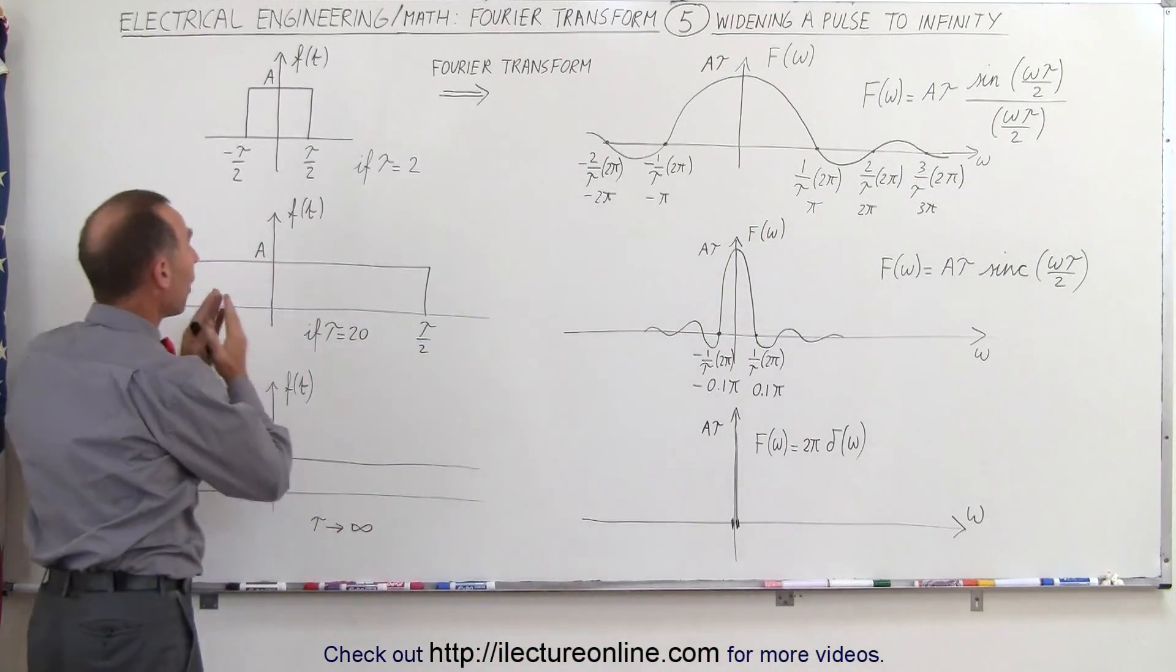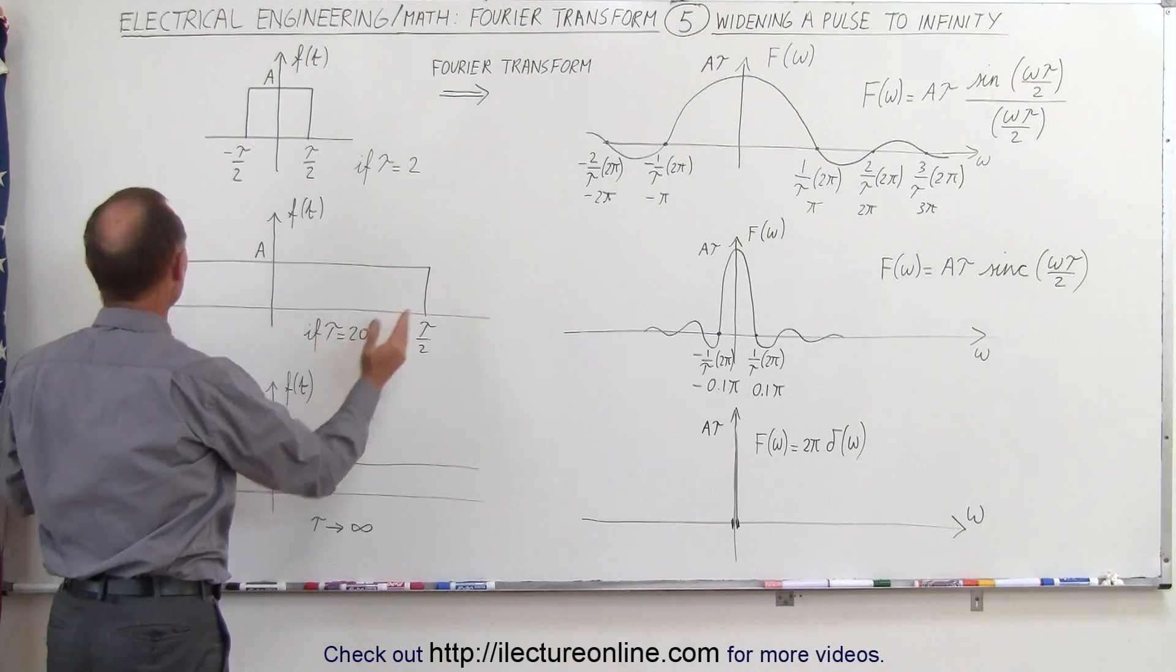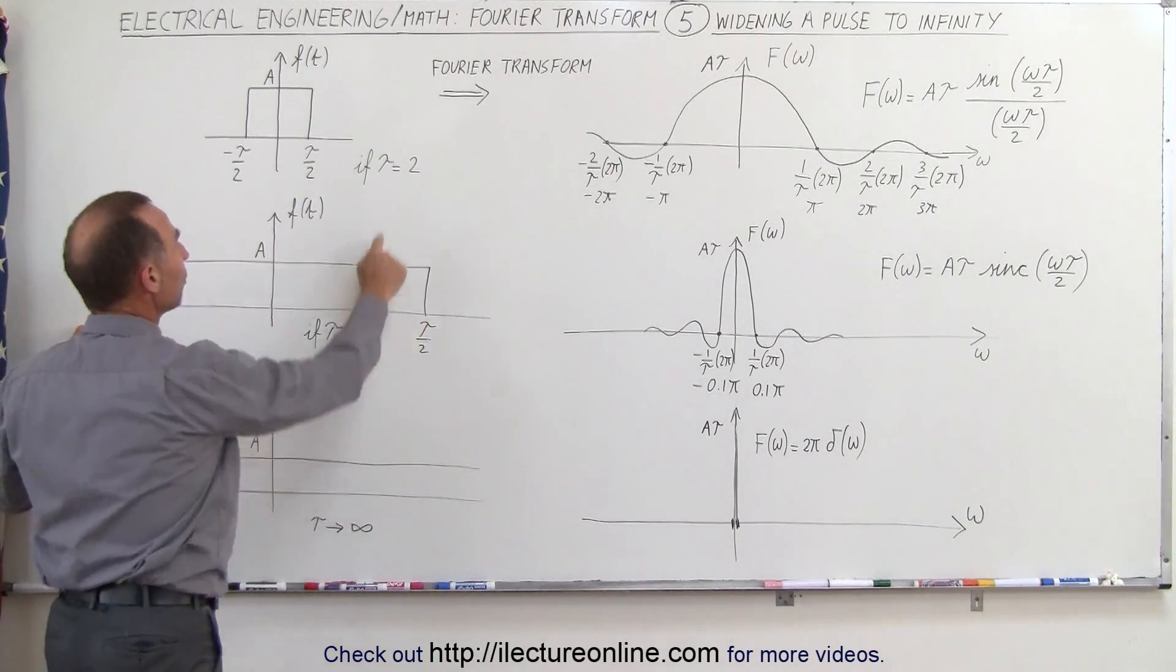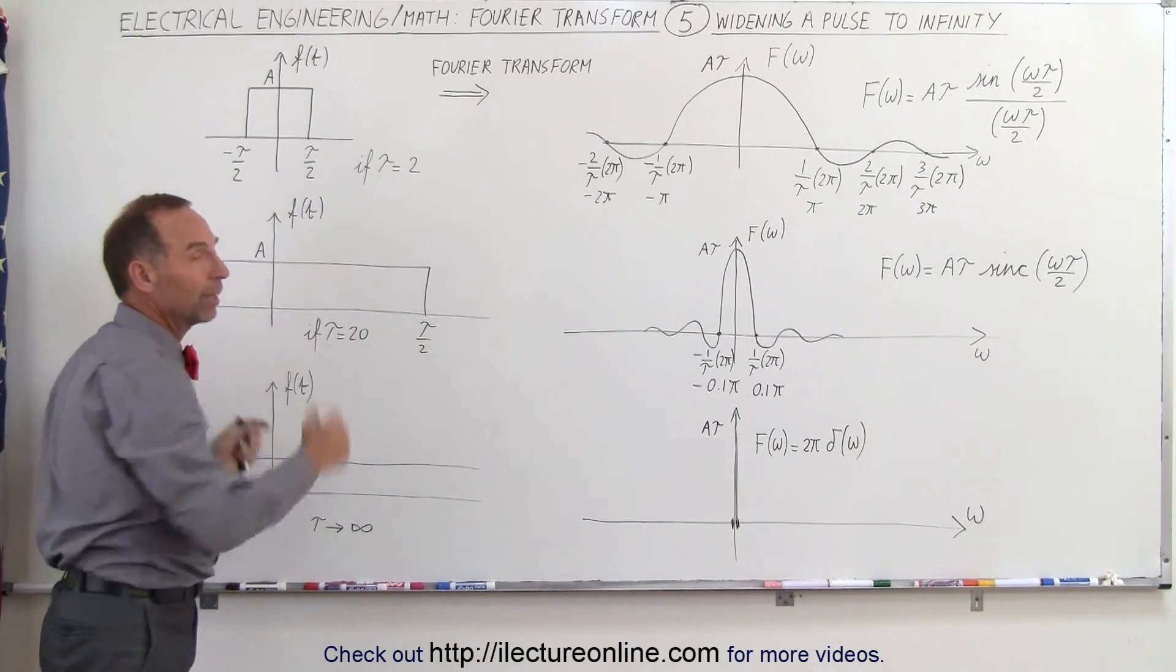What happens when we widen the pulse? The pulse is still from minus tau over 2 to tau over 2, but now tau is 20. We increase tau, we multiply it times 10.